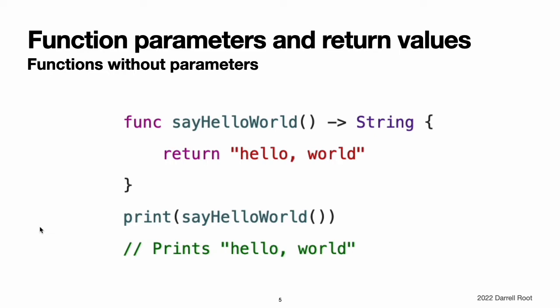Functions without parameters. Functions are not required to define input parameters. Here is a function with no input parameters, which always returns the same string message whenever it is called. The function definition still needs parentheses after the function's name, even though it doesn't take any parameters. The function's name is also followed by an empty pair of parentheses when the function is called.